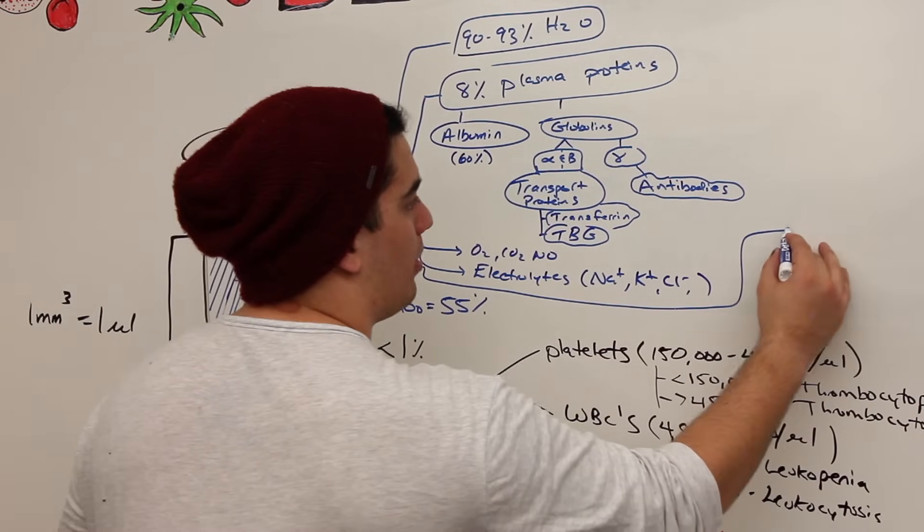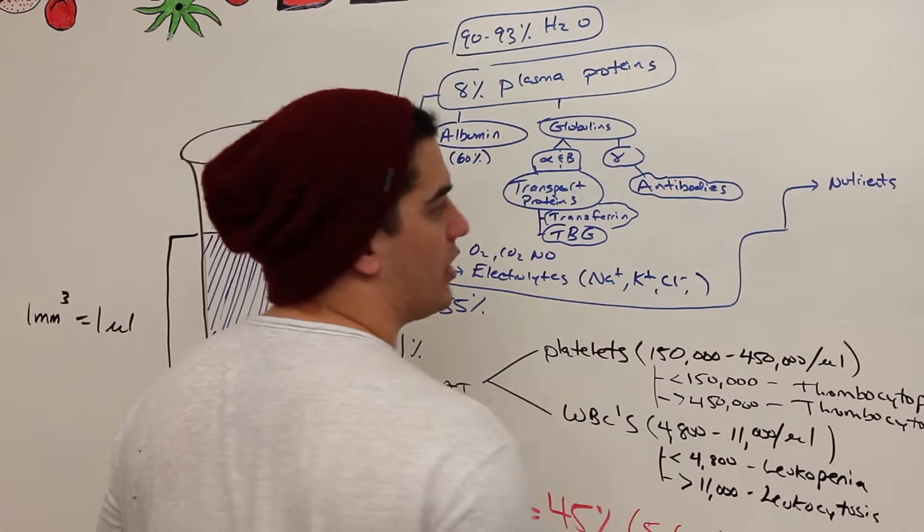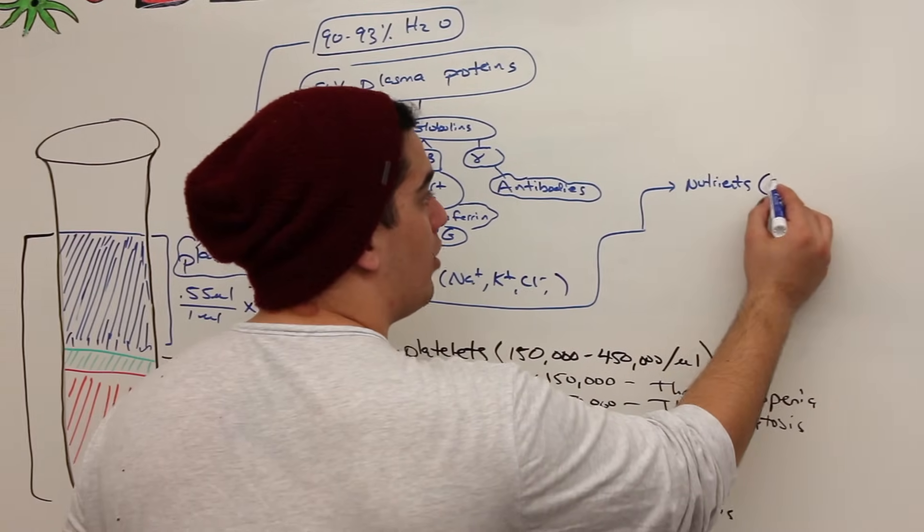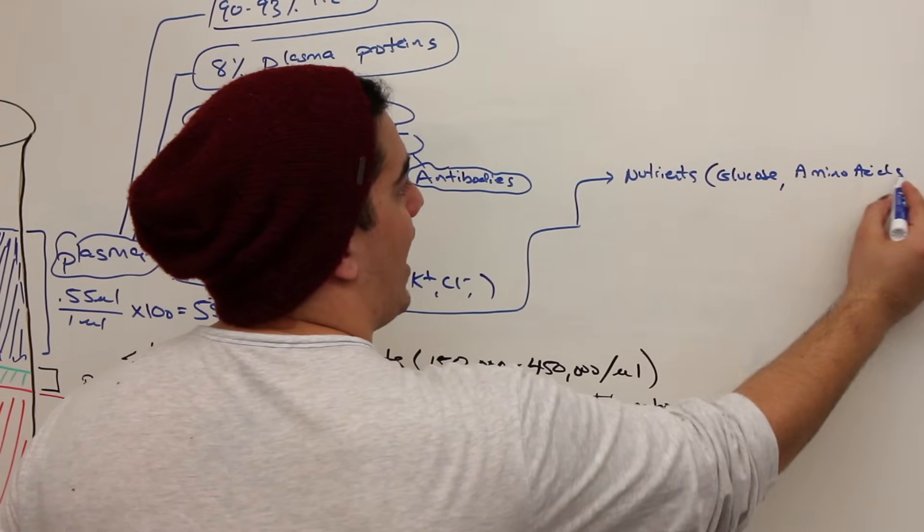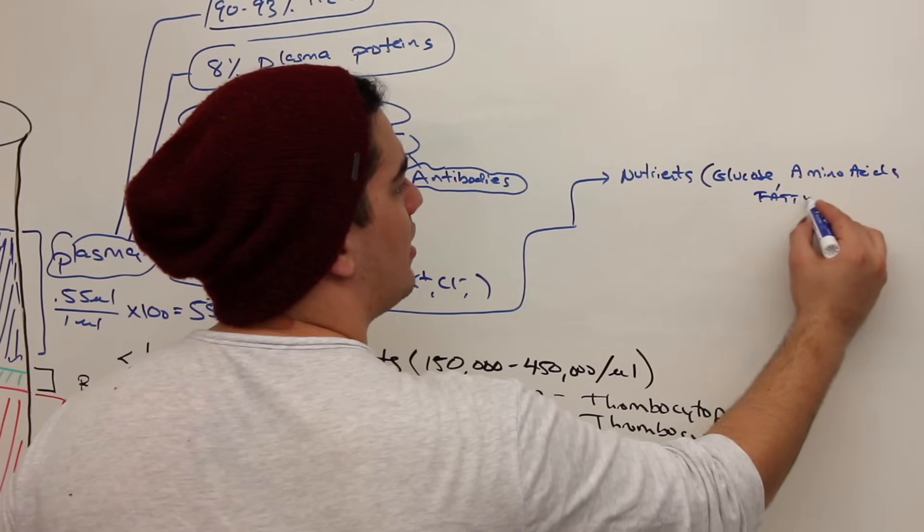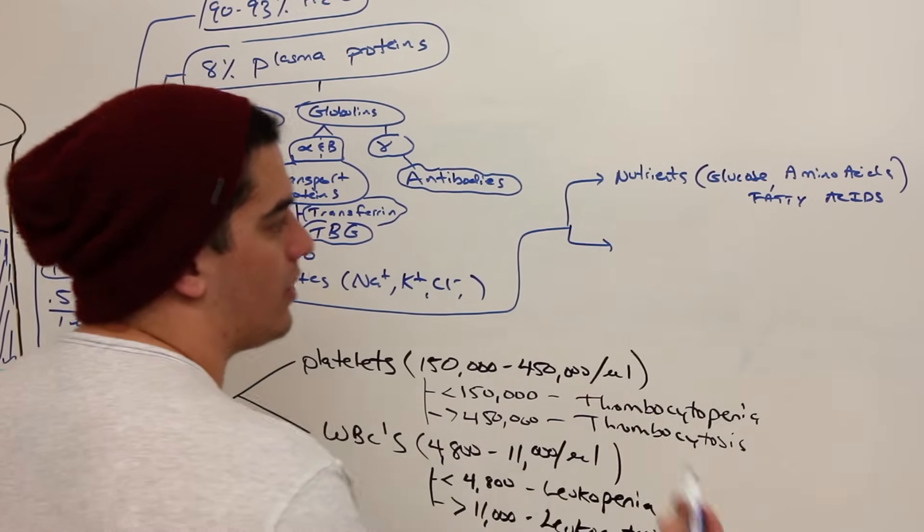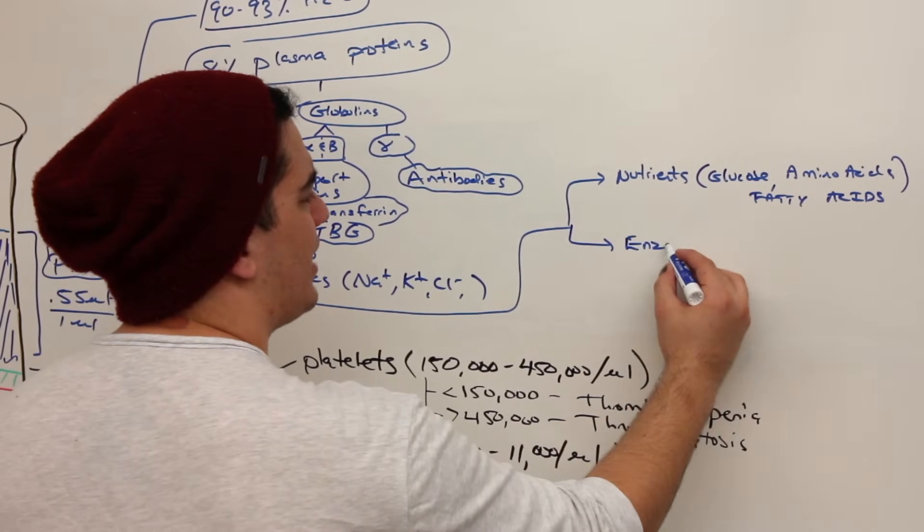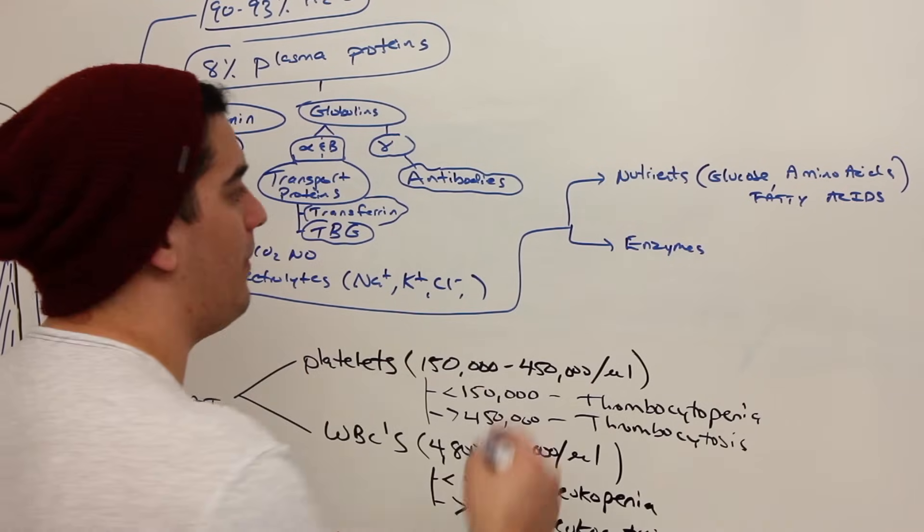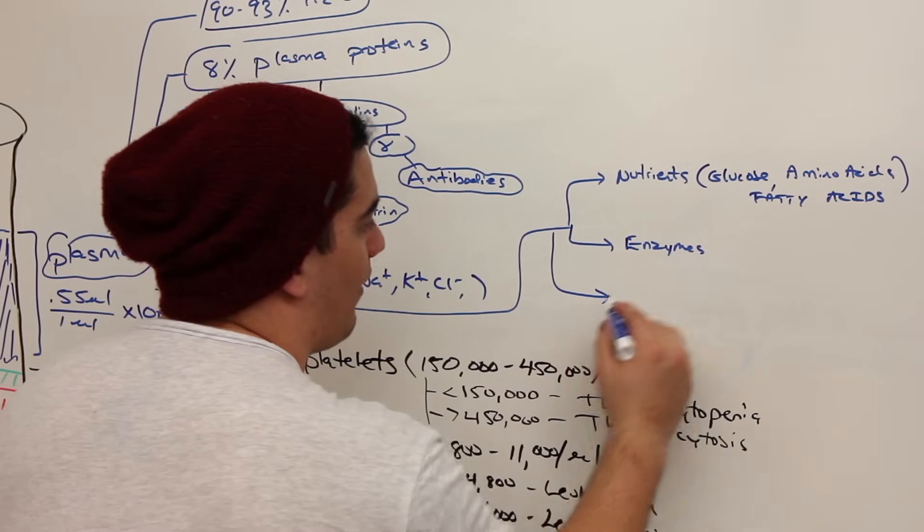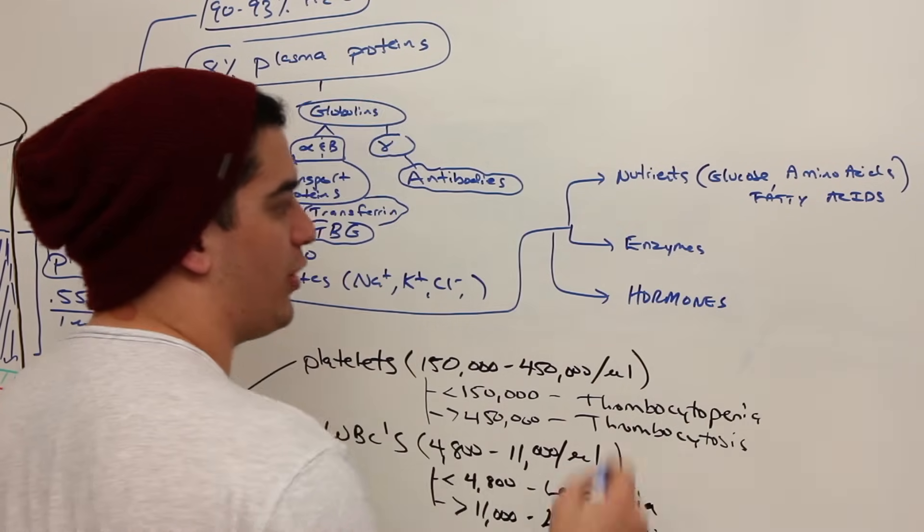What else does it have within it? It also has a couple other things. Let's say nutrients. So nutrients is very important. Some of these nutrients are going to be things like glucose. Glucose is very critical. Amino acids, fatty acids. So tons and tons of different types of substances that you can find as nutrient-wise. What else? Enzymes. Different types of enzymes. Antimicrobial enzymes, functional enzymes. What else? You can even have hormones. So you can have hormones within the bloodstream because that's their main form of transport.